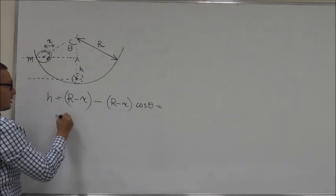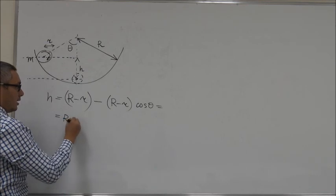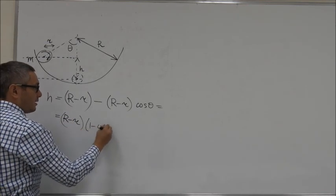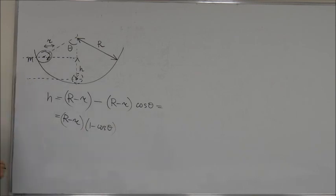So, we conclude that h is equal to R minus r times one minus cosine theta. Let's leave it here. We're going to use it later.